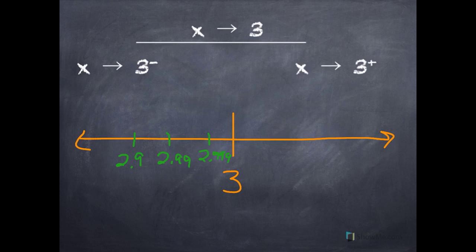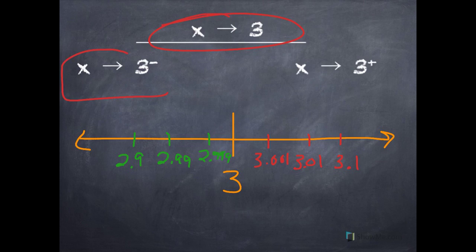From the right — what's a number that's close to 3 from the right? How about 3.1? Could we get closer? Sure — 3.01, and then 3.001. From the right, we're getting closer and closer to 3. We're not actually going to get there — we're just going to get closer and closer. So: x approaches 3, x approaches 3 from the left, x approaches 3 from the right.